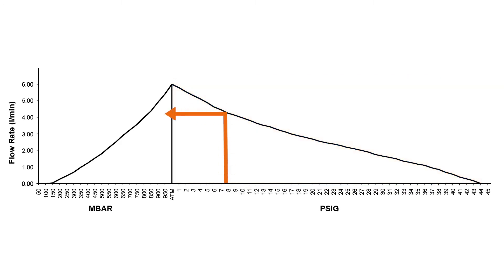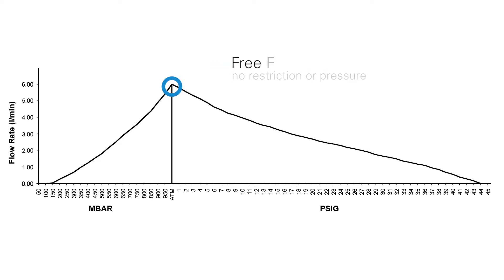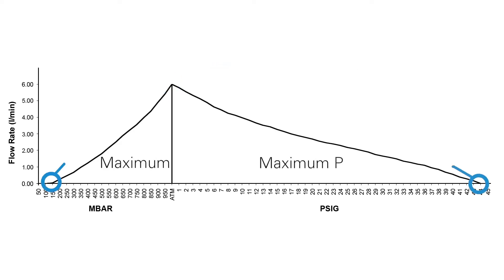The pump's performance, known as flow rate, is measured in liters per minute. Regardless of the units, your interpretation of the flow curve will be the same. The point in the middle where the two curves meet is the pump's free flow or maximum flow, meaning there is no restriction or pressure on either side of the pump. The endpoints of the curves represent the maximum vacuum or maximum pressure capabilities of the pump, where the flow rate has dropped to 0 liters per minute.